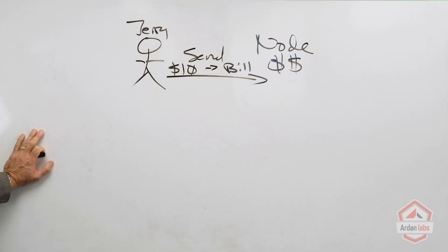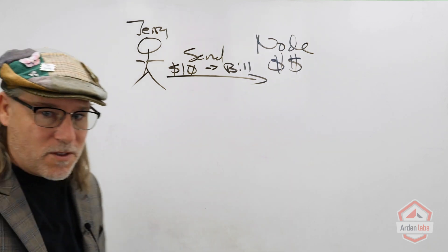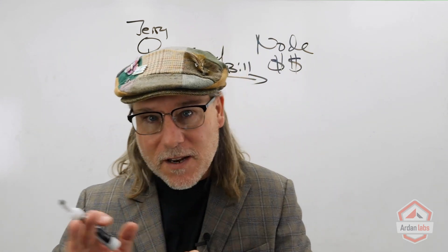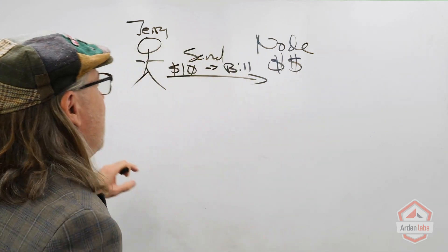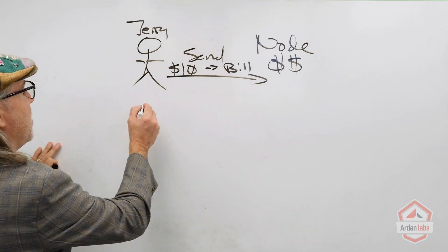Ideally the node will look at the accounting and see that Jerry has the ten dollars to send to Bill, and then we'll send that to Bill. There's a whole accounting system that we're going to have to build as well, but just imagine that's there.